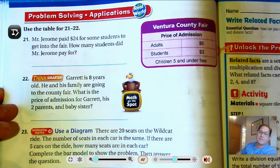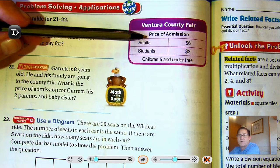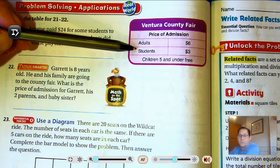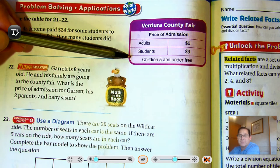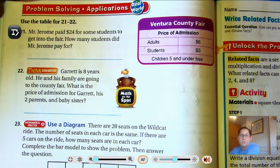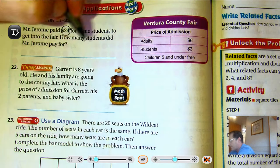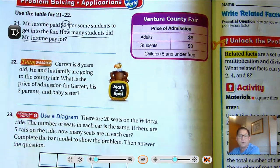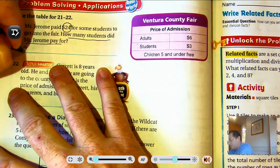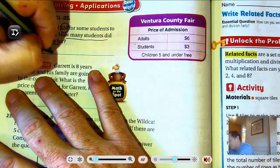For 21 and 22, use the table. The table is information about the Ventura County Fair, talking about the price of admission. Adults cost $6 for their ticket. Students cost $3. If you're a child of 5 or less, you get in for free. Mr. Jerome paid $24 for some students to get into the fair. How many students did Mr. Jerome pay for? He paid $24 for some students. So he spent $24 divided by $3 a student equals how many students?